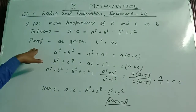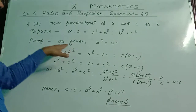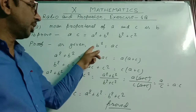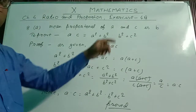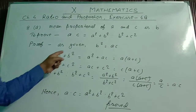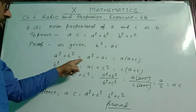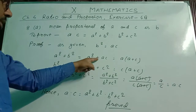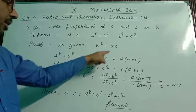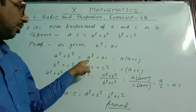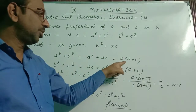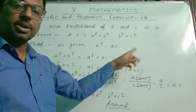Proof: As given, b is the mean proportional of a and c, so we can write b² = ac. Now, a² + b² = a² + ac. At the place of b², I kept the value ac. From these two terms, I have taken a as common, so inside the bracket: a(a + c).